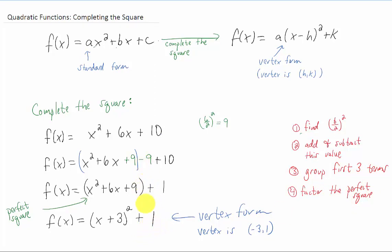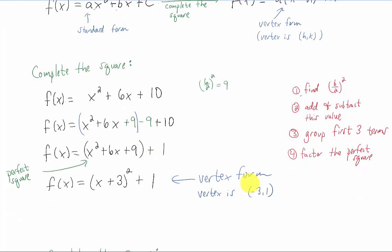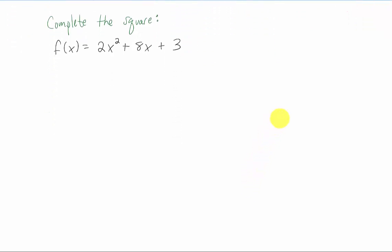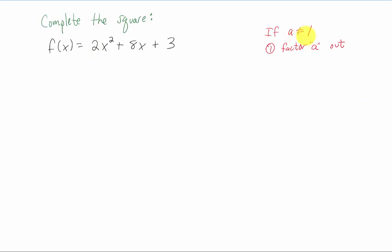Sometimes you do have to deal with fractions when we do this process. One complication that I do want to address in this video is what happens if instead of a equals 1, we have a equals anything else. If a is anything other than 1, our first step is going to be to factor that a out of the function first.